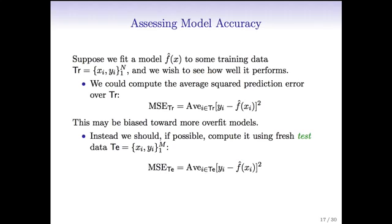We want to see how well this model performs. We could compute the average squared prediction error over the training data: MSE_Tr = Average over Tr of [yi - f-hat(xi)]^2. This may be biased towards more overfit models. We saw with the thin plate spline we could fit the training data exactly and make this mean squared error zero.